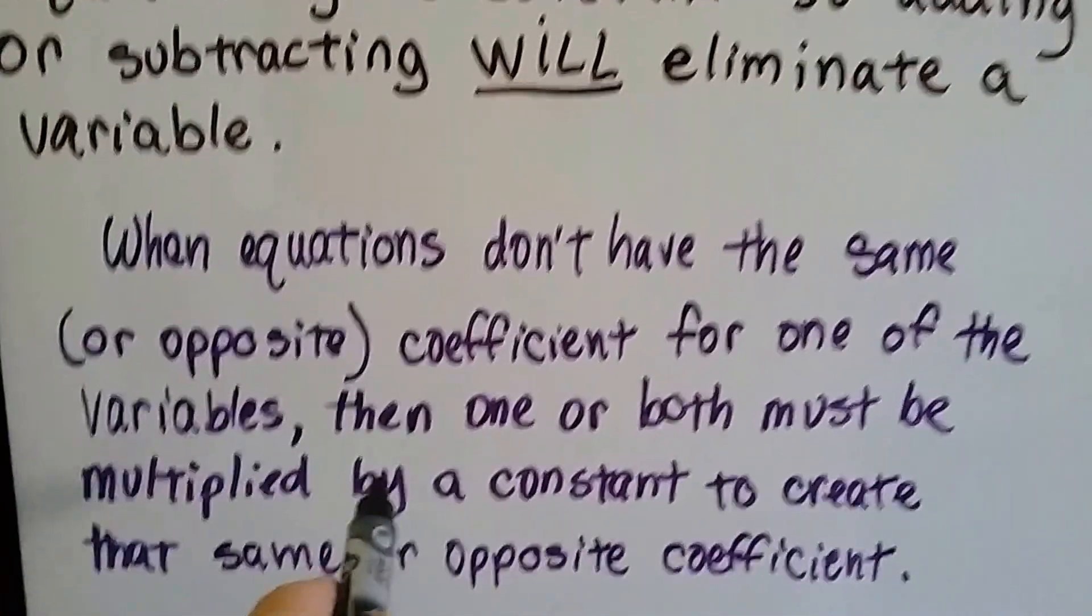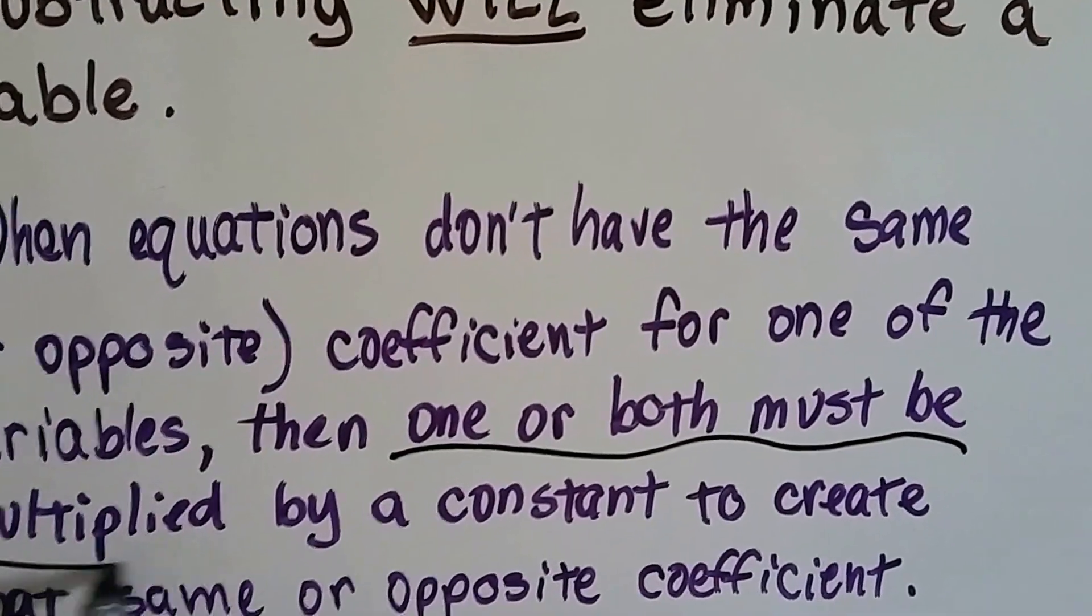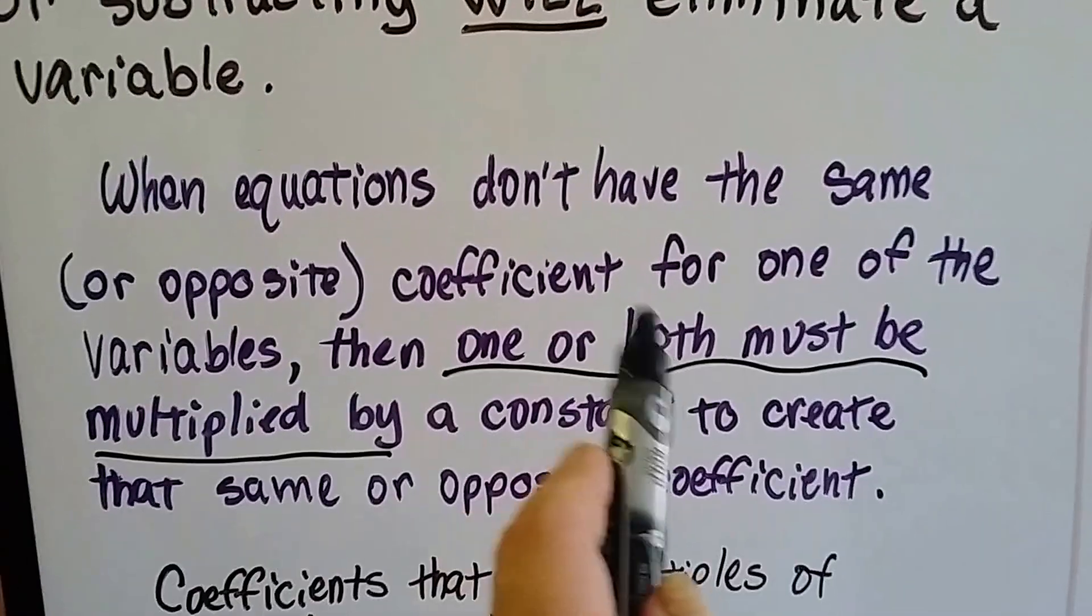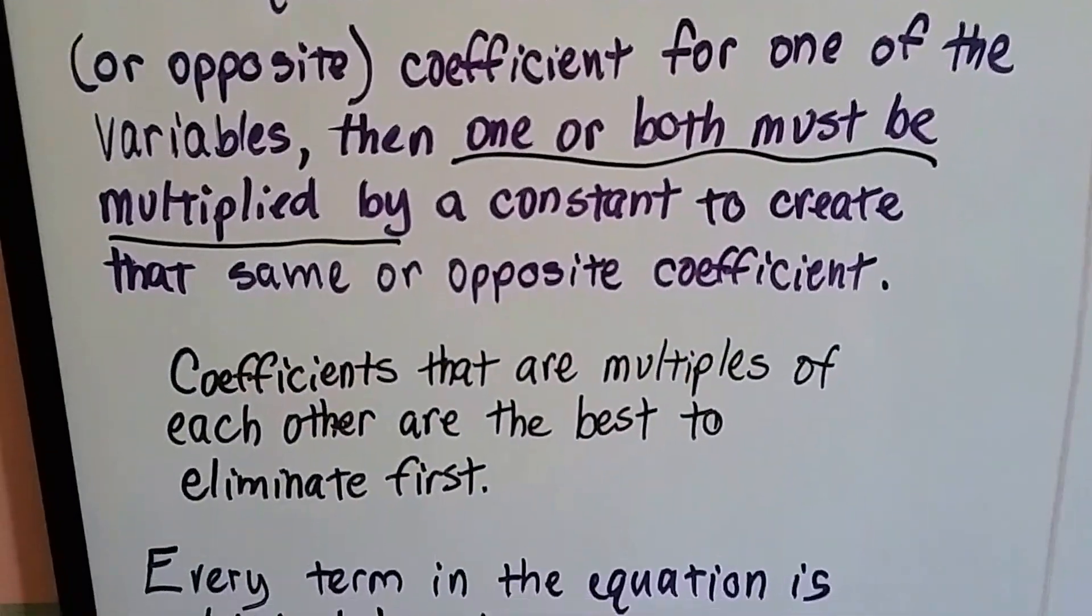Now watch. It says here one or both must be multiplied. See that? So it's not just one. You might have to multiply both equations by something, by a constant.